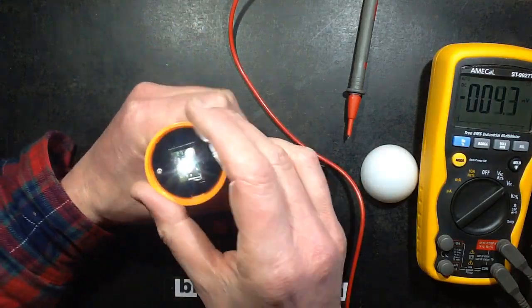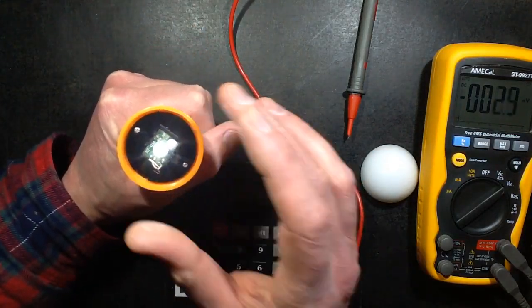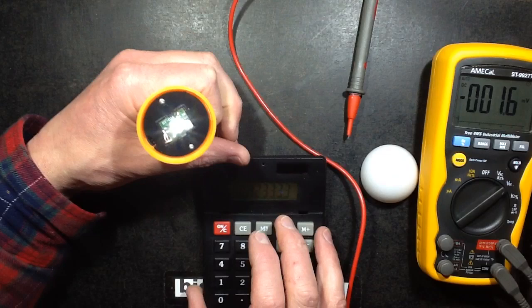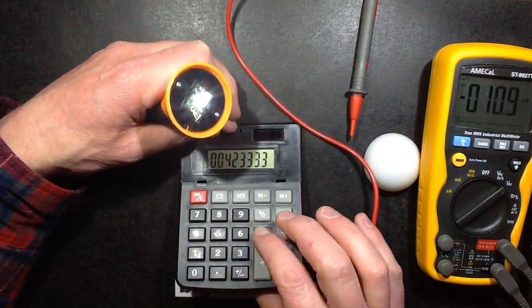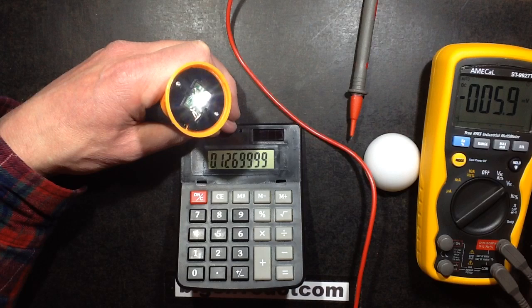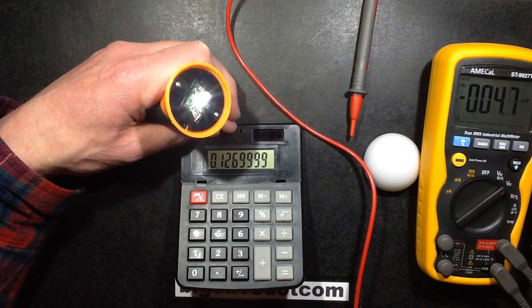So somewhat short of the 1-watt rating, which would be about 350 mA. But let's go with that. So it's 42 mA times 3 volts. The actual output rating is 0.126 watts, so about 1/8 of a watt.